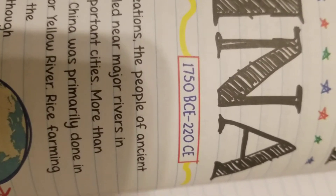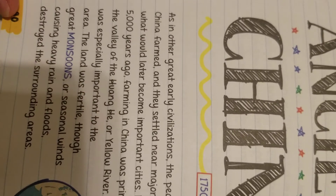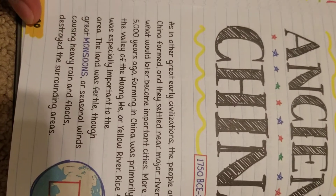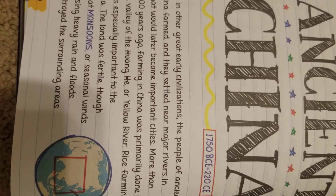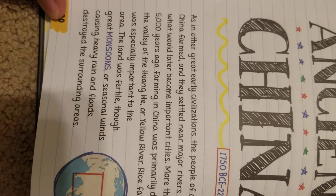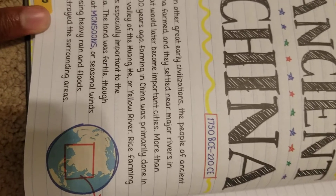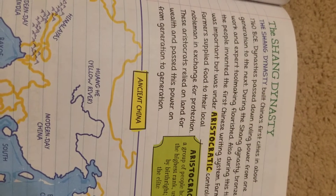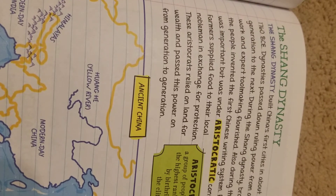As in other great early civilizations, the people of ancient China farmed and settled on major rivers first, and what would later become important cities. Ancient China settled their civilizations in cities, and then came the Shang Dynasty.